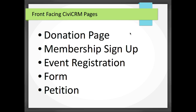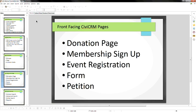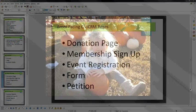How these pages get created depends on your CMS. In Drupal they're published as soon as they're saved and active, and easy to link to. In WordPress, you have a bit more control — you create a new page and choose the CiviCRM element. Joomla works quite similarly to WordPress.